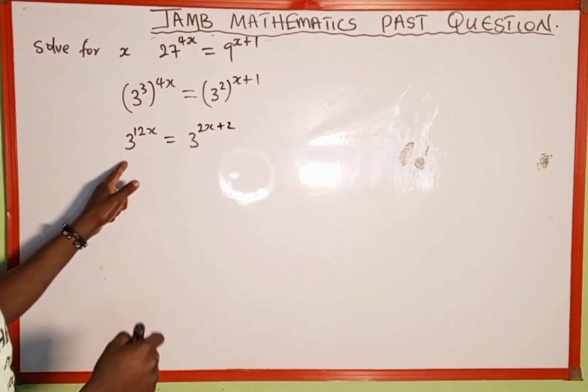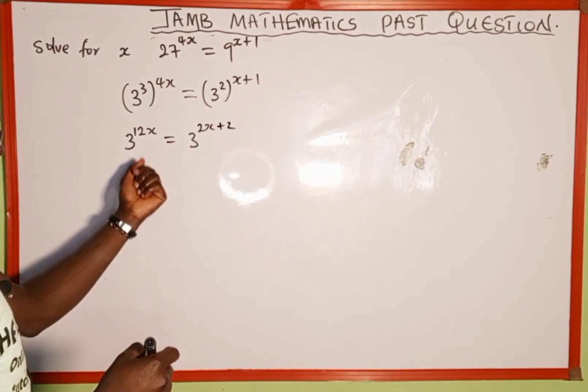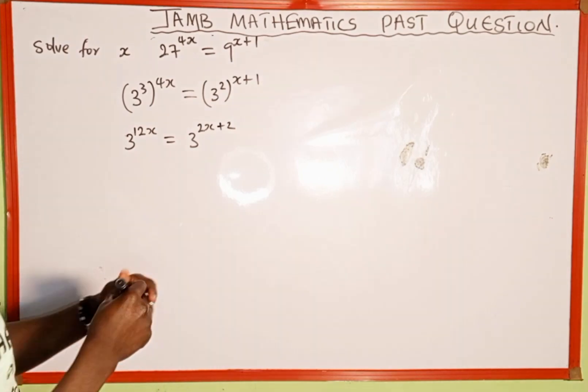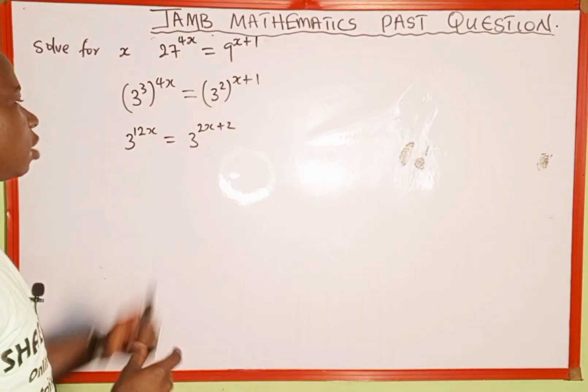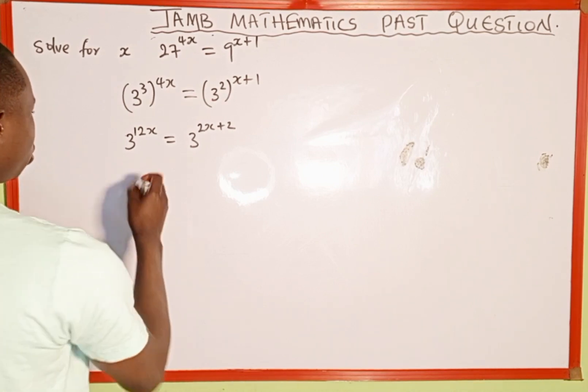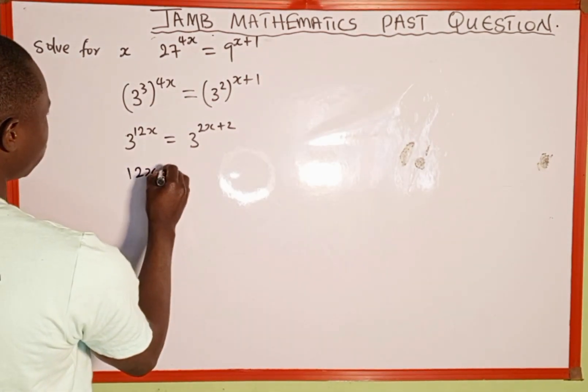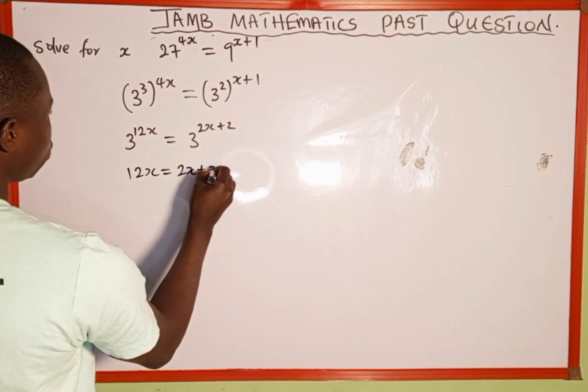Now, as you can see, the bases are the same. According to one of the properties of indices, since the bases are the same and there is an equality sign, we can equate the powers. So 12x equals 2x plus 2. We just cancel out the base.